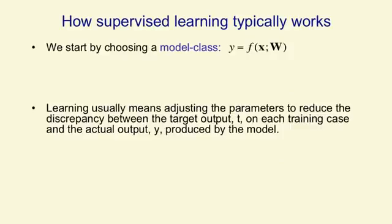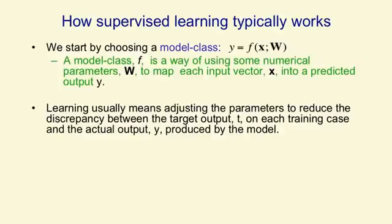Supervised learning works by initially selecting a model class — that is, a whole set of models that we're prepared to consider as candidates. You can think of a model class as a function that takes an input vector and some parameters and gives you an output y. A model class is simply a way of mapping an input to an output using some numerical parameters w, and then we adjust these numerical parameters to make the mapping fit the supervised training data.